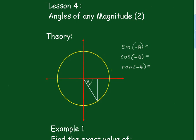Lesson 4: Angles and Magnitudes Part 2. In this lesson we're going to look at negative angles. This is the theory. We measure in this direction here, and this is going to be minus theta.